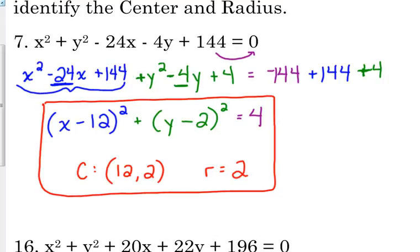R squared will always be positive. The numbers inside the parentheses for our center can be negative. But when we're completing the square and adding that number, we're always adding it — it's never going to be negative. The number you divide by 2 can be negative, but after you square it, the result is always positive.